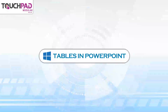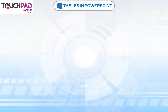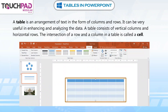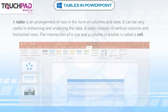Tables in PowerPoint. A table is an arrangement of text in the form of columns and rows. It can be very useful in enhancing and analyzing the data. A table consists of vertical columns and horizontal rows. The intersection of a row and a column in a table is called a cell.